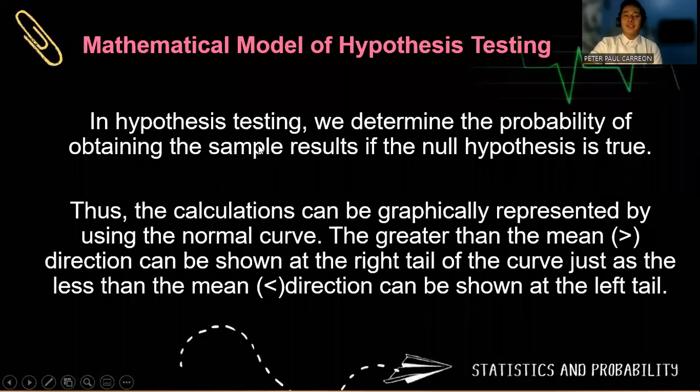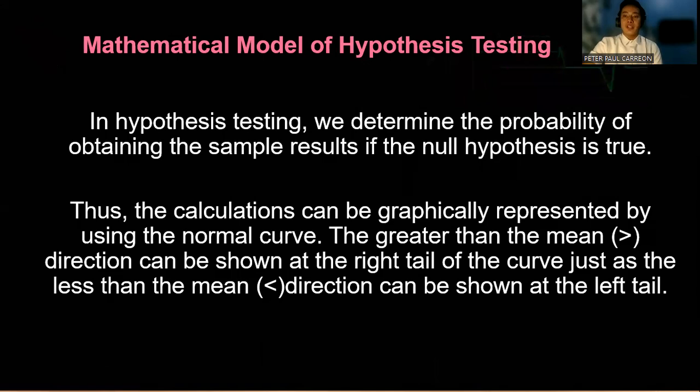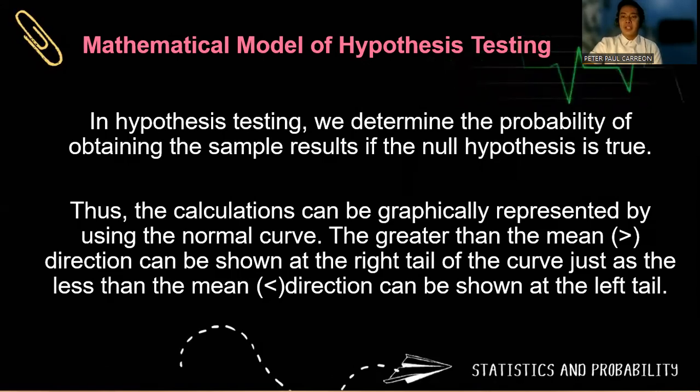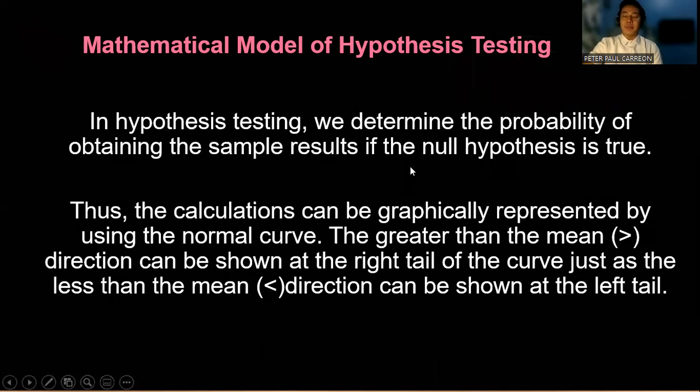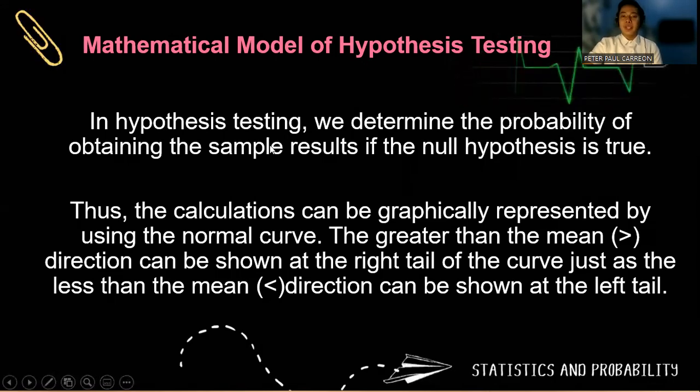So in a mathematical model of hypothesis testing, we always determine the probability of obtaining the sample results if the null hypothesis is true. So our job here is to prove and disprove a certain claim. Thus, when we want to represent it graphically into a mathematical model, the best way to illustrate the probabilities is using the normal curve or the normal distribution.